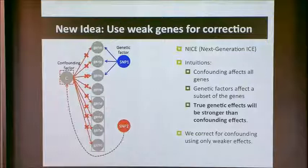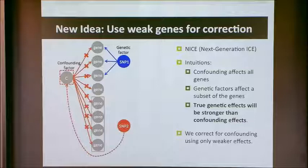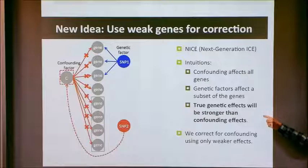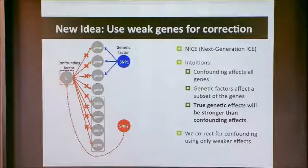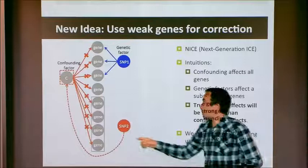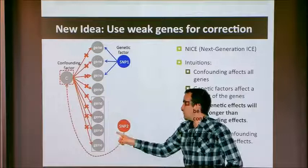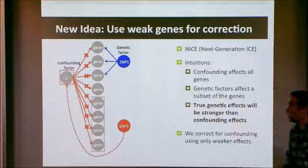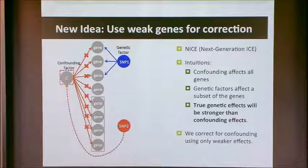We were stuck for many years, but we had a new idea not too long ago. Our basic intuition is that confounding factors like batch effects will affect all genes, but genetic factors will only affect a subset. A genetic factor affecting half of all genes is not plausible. So true genetic effects should be weaker in terms of how broadly they affect genes than confounding effects. If we correct for confounding using only the weakly-affected genes, we would block the spurious hotspots without eliminating the real ones. This led to our method named NICE — next generation ICE.